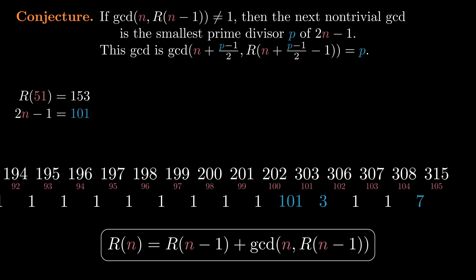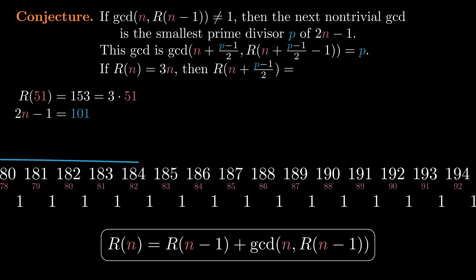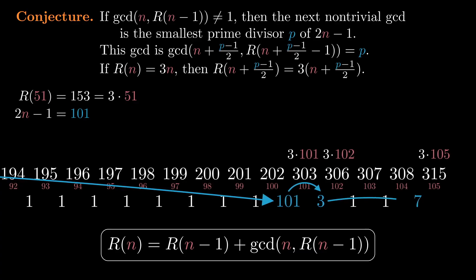What makes it work is the final observation that there's something special about the indices n where we see GCDs that aren't 1: R(n) is exactly 3 times n for those indices. For example, R(105) is 315, which is 3 times 105. R(102) is 3 times 102. R(101) is 3 times 101. And R(51) is 3 times 51. Whenever we're in this nice situation where R(n) equals 3n, then P minus 1 over 2 steps later, we're in another situation where the value of the sequence is 3 times its index, and so on.